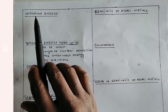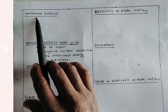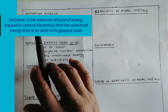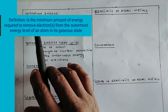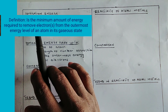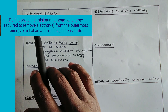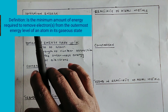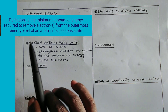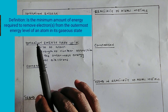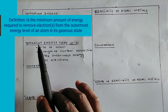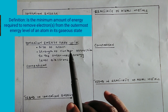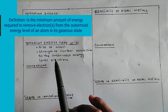The first thing we should look at under ionization energy is the definition of this term. Ionization energy is the minimum amount of energy required to remove the outermost energy level electrons of an atom in its gaseous state. The amount of energy required depends on the size of the atom and the strength of the nuclear attraction to the outermost energy level electrons.